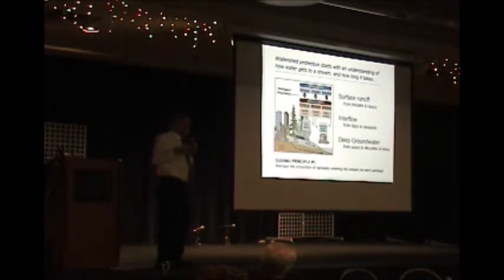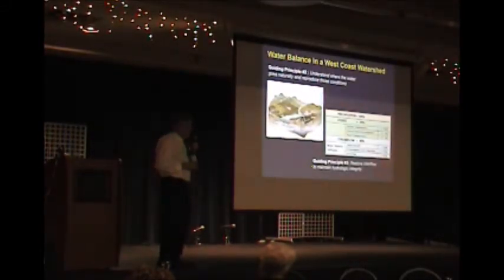If you want this document, go to waterbucket.ca, go to the page for guidance documents for resources. It's there. It's like less than 20 pages. Read it. I'm just going to go through a quick set of guiding principles. Watershed protection starts with an understanding of how water gets to a stream and how long it takes. Guiding principle number one is you've got to maintain the proportion of rainwater entering the stream by each pathway. That brings you back to the three pathways: surface, interflow, deep groundwater. The significance of those pathways is the time element. If you think about how we develop, we've accelerated the time element. We've shortened the time element, and that's accelerating the consequence, the impacts and the consequences.